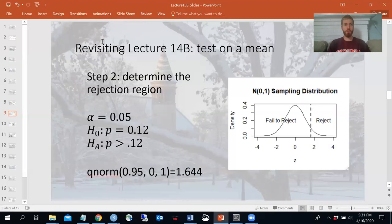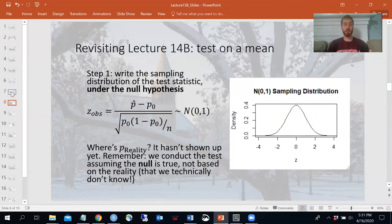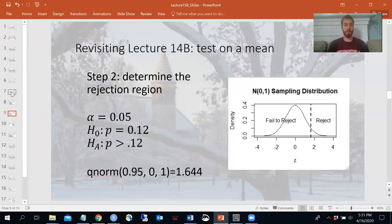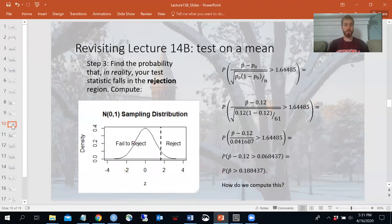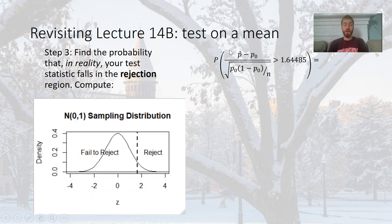So now let's work through the math. The first steps are the same whether you're doing Monte Carlo or the mathematical way. Step zero: write all the relevant information. Step one: write the sampling distribution of the test statistic. Step two: determine the rejection region. For the reason we discussed, it's 1.644. If my observed test statistic falls in the rejection region, I'll reject; otherwise I'll fail to reject. Mathematically, we need to find the probability that in reality my test statistic falls in the rejection region — that is, the probability that Z-observed is greater than 1.64485.